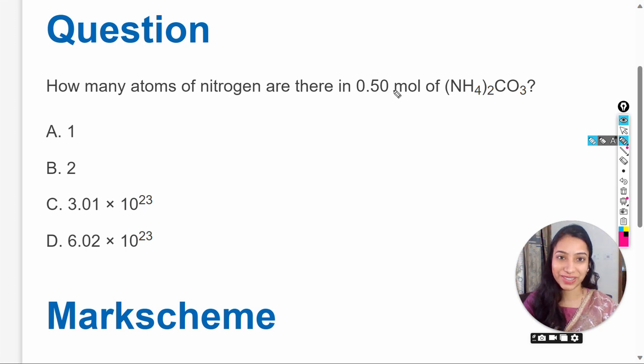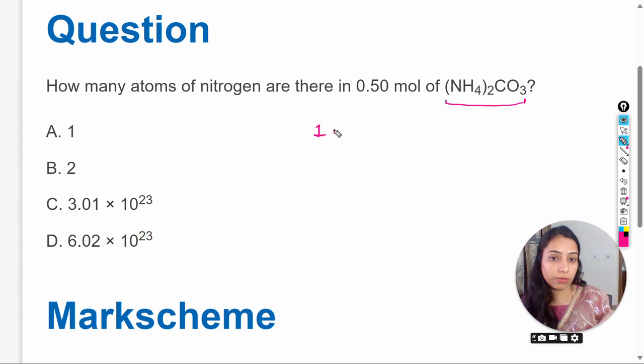Hello dear students, in this video we are going to solve this question from the topic the mole concept: How many atoms of nitrogen are there in 0.5 mole of (NH4)2CO3? If we see this molecule, one molecule of (NH4)2CO3 contains two nitrogen atoms.